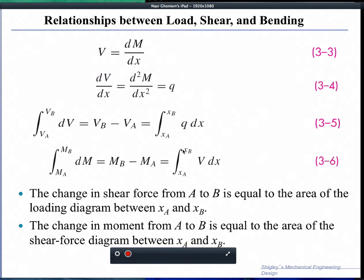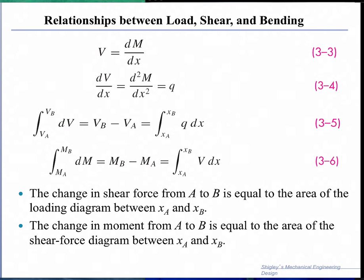So you do one integration, you go from q to V by one integration. VB between two different points B minus A is equal to the integral from position A to position B of the load intensity.